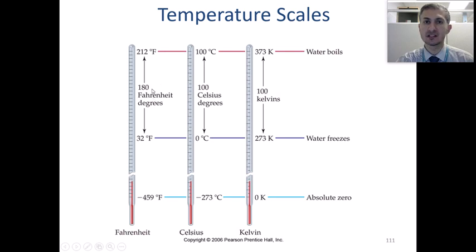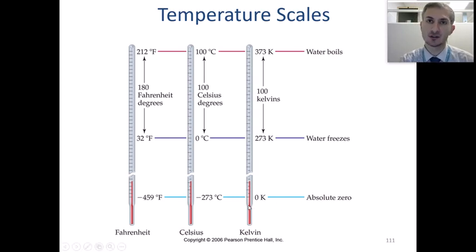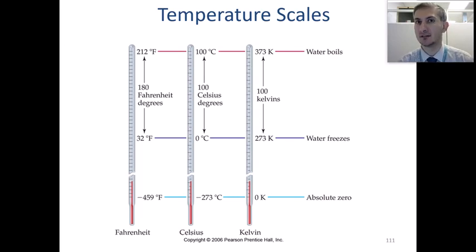One of the most important things in the Kelvin temperature scale is absolute zero — the lowest temperature in our universe that we can theoretically imagine. Absolute zero is 0 Kelvin, which equals negative 273 degrees Celsius and negative 459 degrees Fahrenheit. The lowest temperature in Kelvin is zero, so there are no negative numbers in Kelvin. We call this absolute zero.